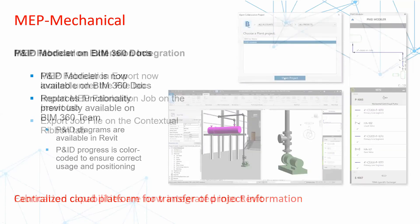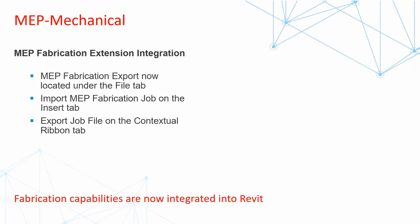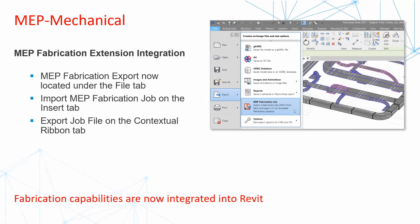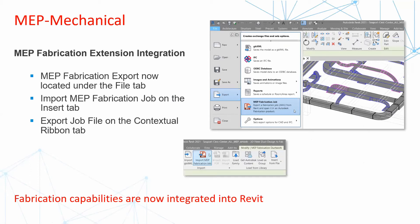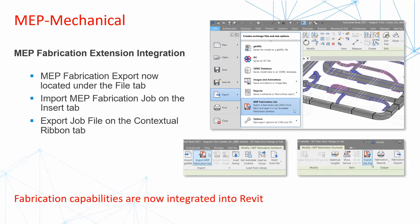Another feature coming out of MEP mechanical is the MEP fabrication extension integration. MEP fabrication exports are now located under the file tab — you can go to file, then export as MEP fabrication job. You can also import MEP fabrication jobs on the insert tab. And you can export job files from a contextual ribbon under your MEP fabrication. The idea of exporting and importing these jobs is to allow you to collaborate and work better with those on your assembly or those using the software. Fabrication capabilities are now integrated into Revit MEP 2021.